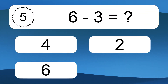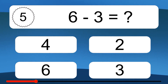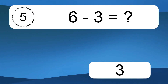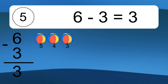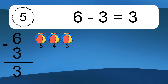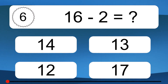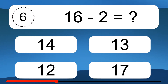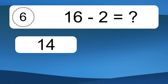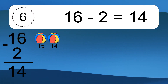6 minus 3 equals what? 6 minus 3 equals 3. Let's count it: 5, 4, 3. 16 minus 2 equals what? 16 minus 2 equals 14. Let's count it: 15, 14.